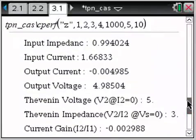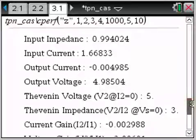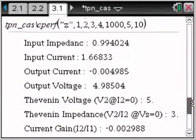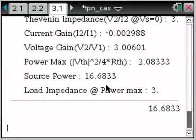Now we will get input impedance, input current, output current, output voltage, thevenin voltage, thevenin impedance, current gain, voltage gain, maximum power, source power, load impedance at max power.